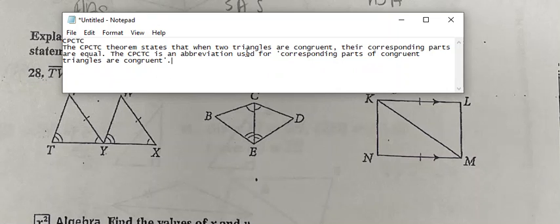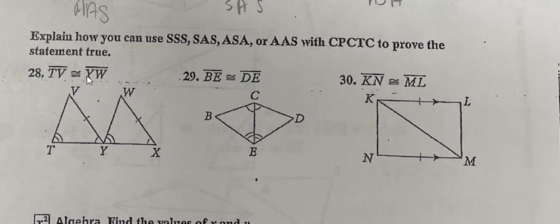So the first one, it's telling us that this side TV is congruent with YW. But we also want to look at the actual diagram that they provide. We have an angle here and an angle congruent with this angle, angle, and a side. Well, we know it's going to involve two angles and a side, but it's important to note the side is off of one angle, not both of them.